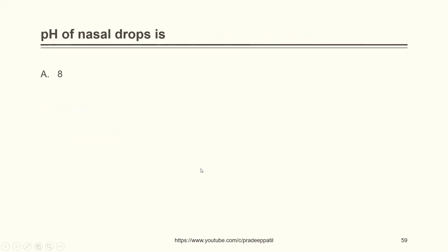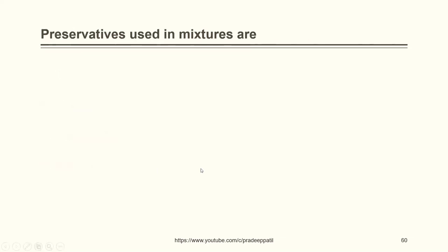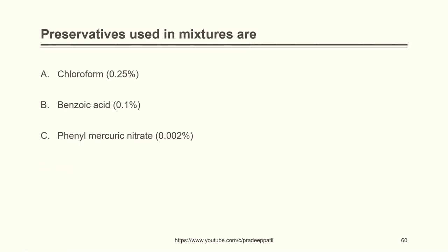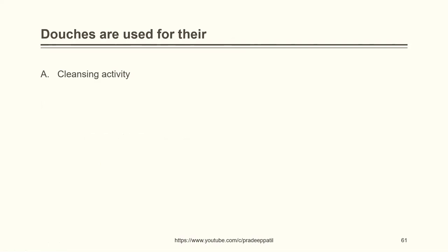The pH of nasal drops is 6.5. Preservatives used in mixtures are: chloroform 0.25% and benzoic acid 0.1% — both A and B are correct. Phenyl mercuric nitrate 0.002% is another option. Douches are used for their cleansing activity, antiseptic activity, and astringent activity — all of the above.